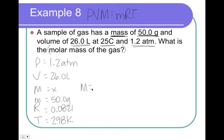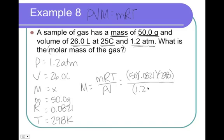Rearrange this for big M, and you get mRT over PV. Plug your numbers in: 50, 0.0821 and 298 divided by 1.2 times 26. Plug this in and you end up with 39.2. But, again, we only allow two sig figs because of that guy right there. So, it's just 39, molar mass is grams per mole.